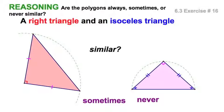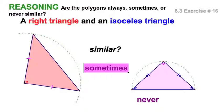They're both right triangles, and they're both isosceles. So I would have to say this is clearly a sometimes.